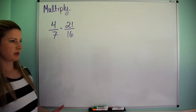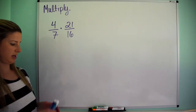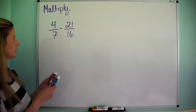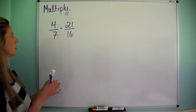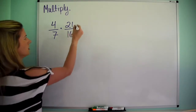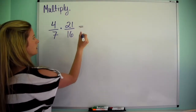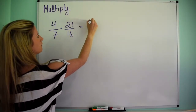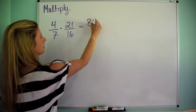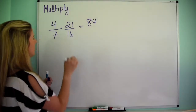4 times 21 — what's that going to be? 84, right? Yeah, 84. Okay, that's good.